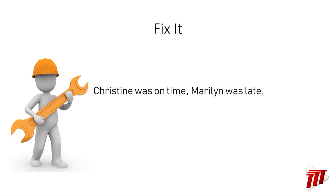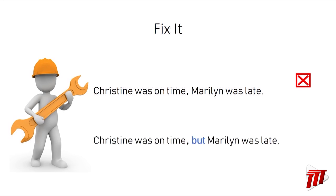Let's look at this comma splice: "Christine was on time, Marilyn was late." A comma is not sufficient to separate two independent clauses — it's not strong enough, and so that's incorrect. Of course you could use a full stop to fix it, but let's find another way. "Christine was on time, but Marilyn was late." Here we've taken the coordinating conjunction "but" and joined the two sentences to form a compound sentence.